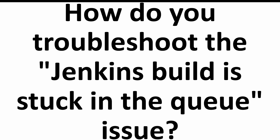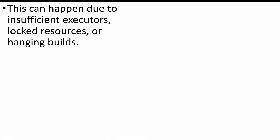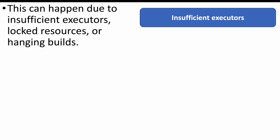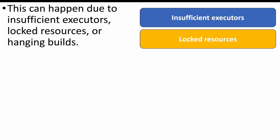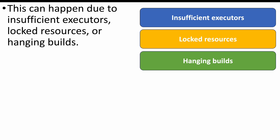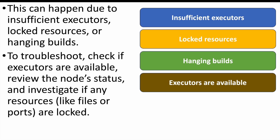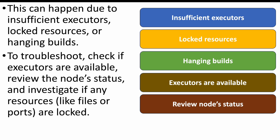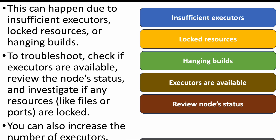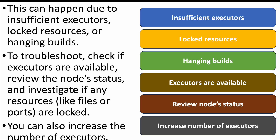The next question: how do you troubleshoot the 'Jenkins build is stuck in the queue' issue? This error occurs when Jenkins does not have enough executors. It may also be caused by locked resources or hanging builds. To troubleshoot, check if executors are available — either increase the number of executors or free them up. Review node status and investigate if resources or ports are locked, then increase executors on the Jenkins instance.